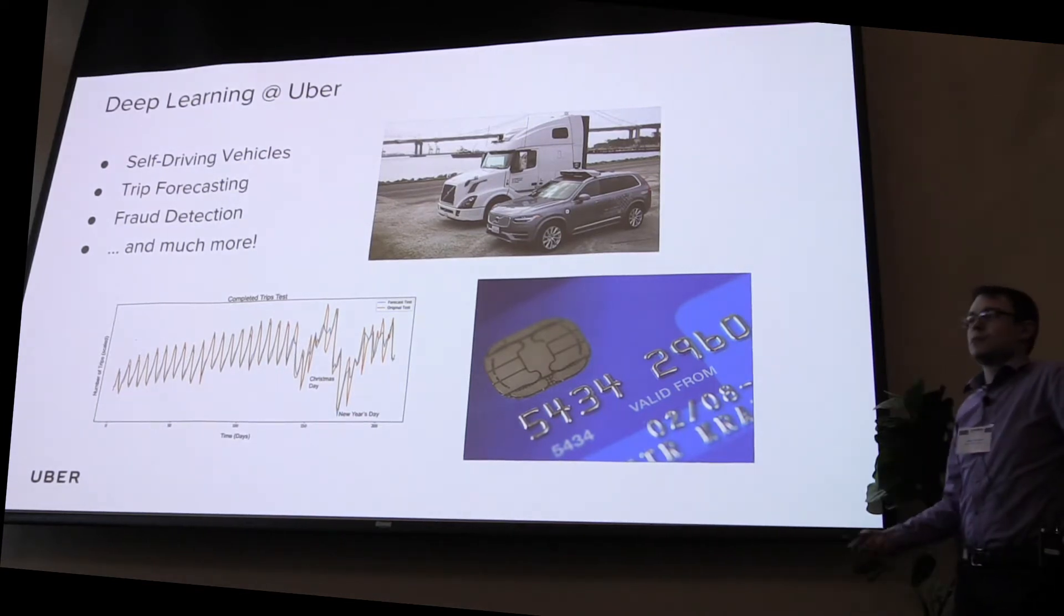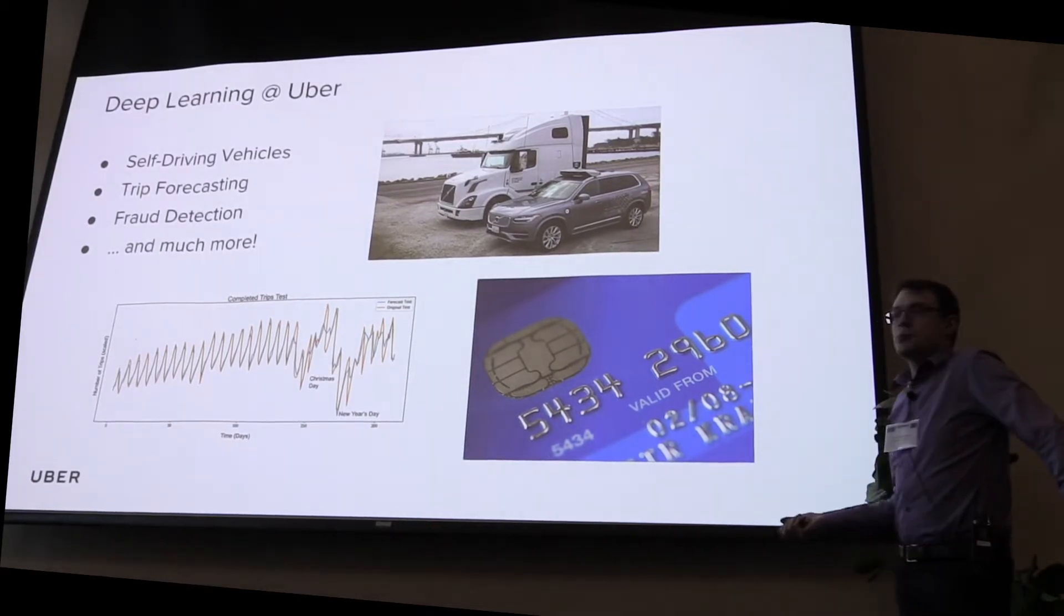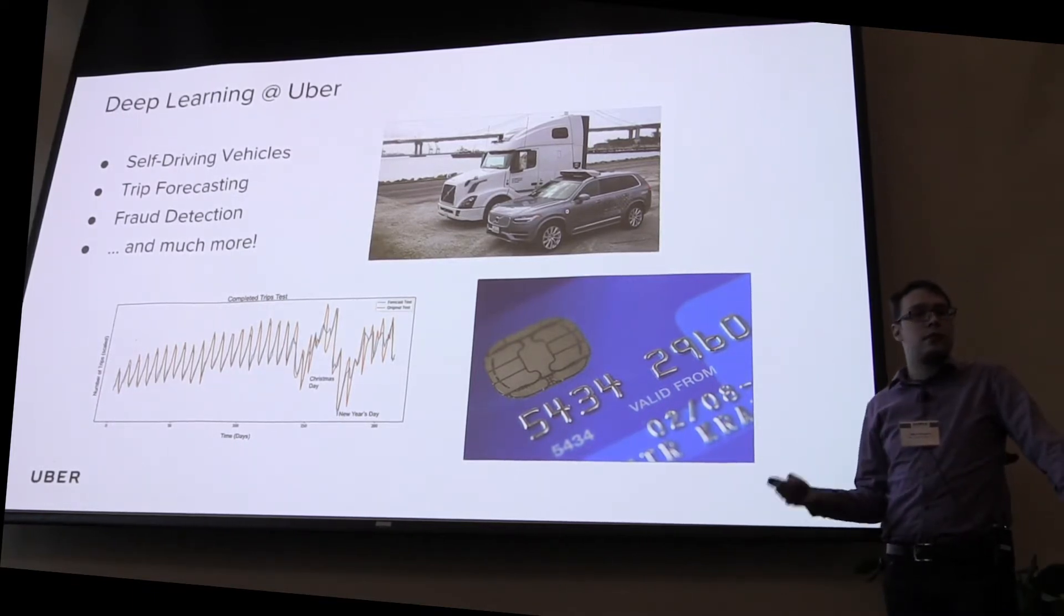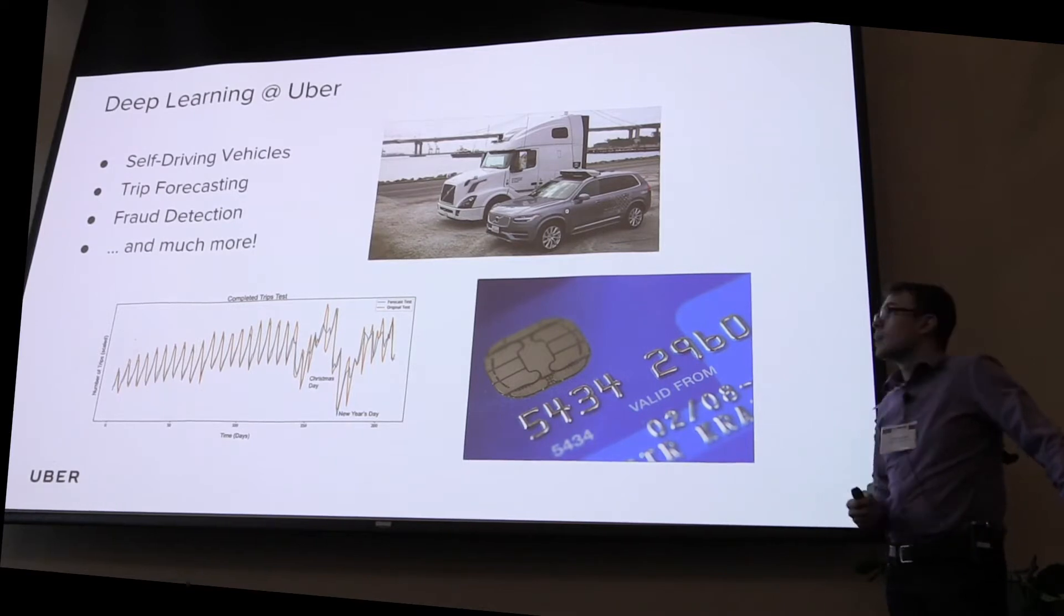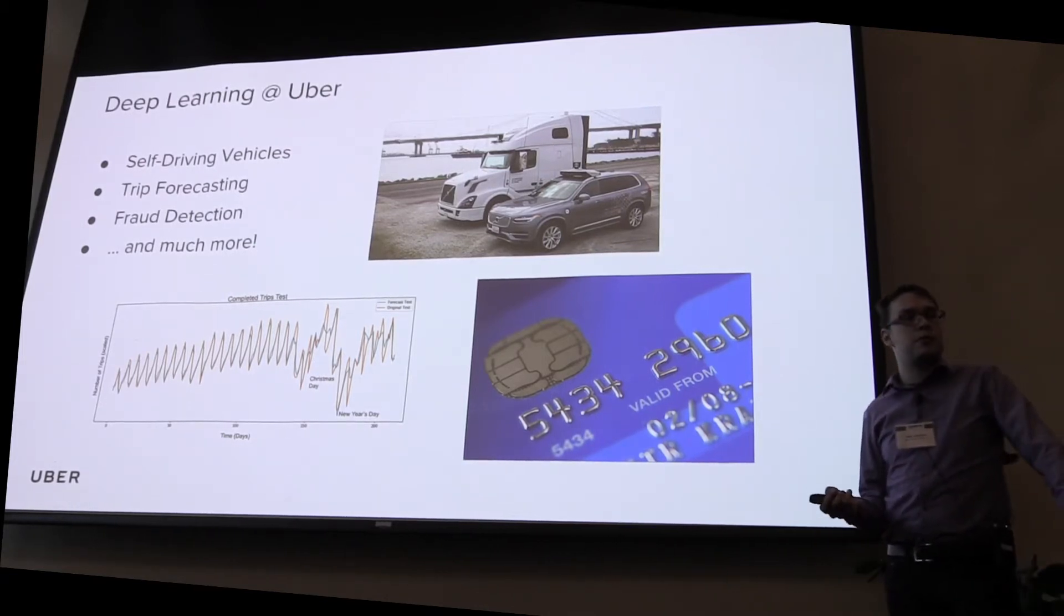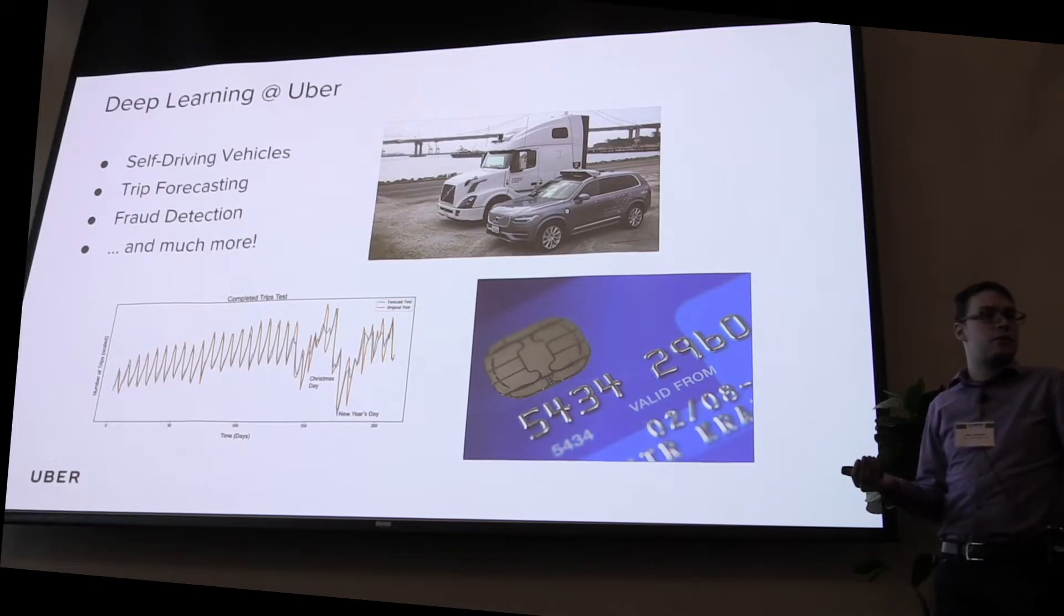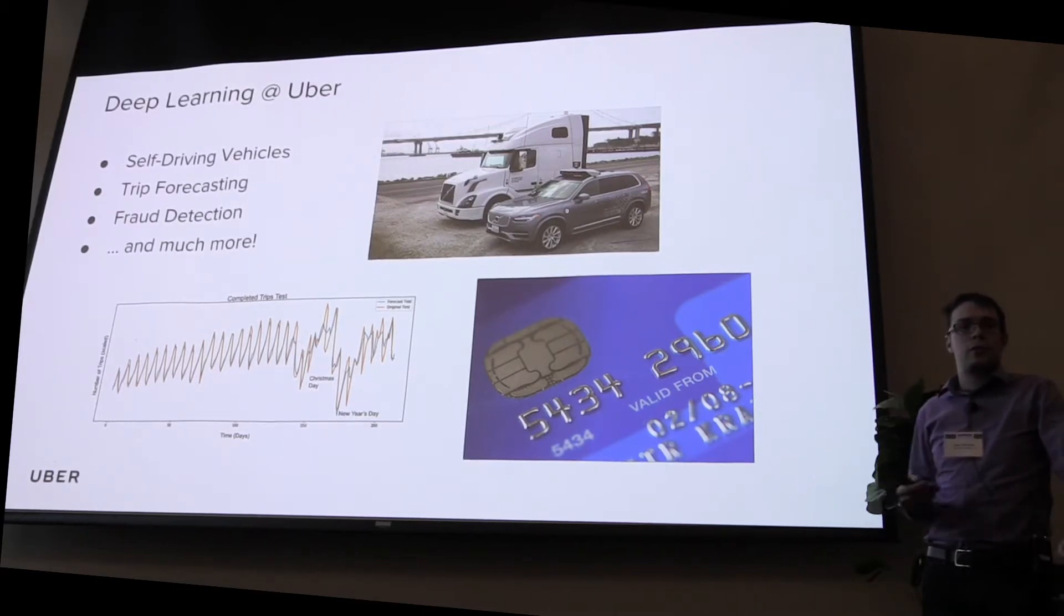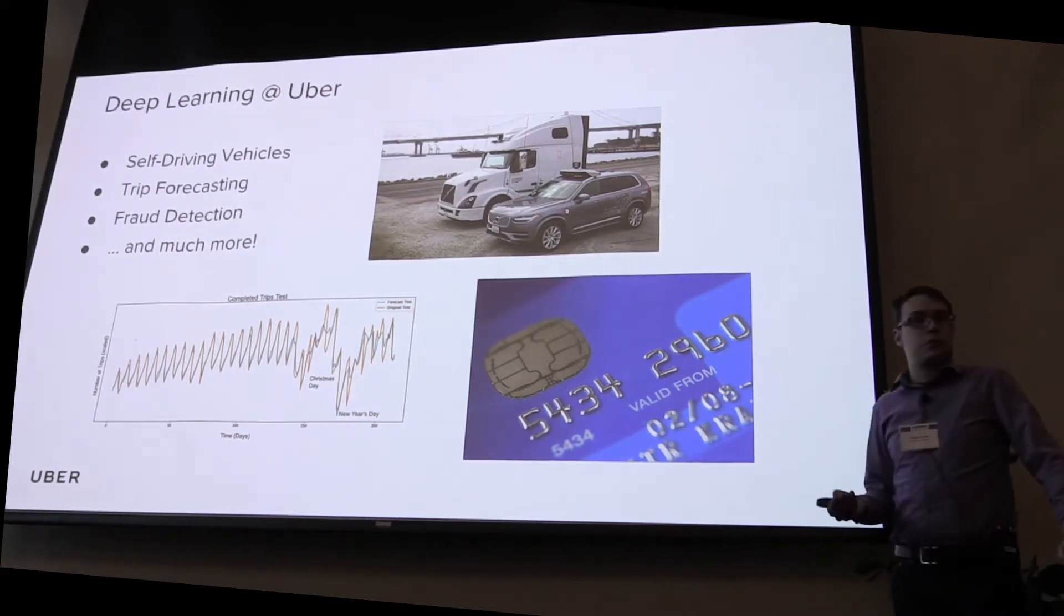So how do we use it in Uber? We have a lot of business divisions and a lot of problems that we can tackle with deep learning. For example, self-driving vehicles, which is both cars and trucks, there are many areas inside that system that can leverage deep learning - computer vision problems, planning problems, all those things. Trip forecasting - we need to know how many people will want to drive for New Year's Eve, which is very peak time for us, and as well as for any other day, so we can decide how much we need to incentivize our drivers to show up. And fraud detection, where we need to make sure that there is no fraudulent activity and we're not spending money on things that we shouldn't be spending on.